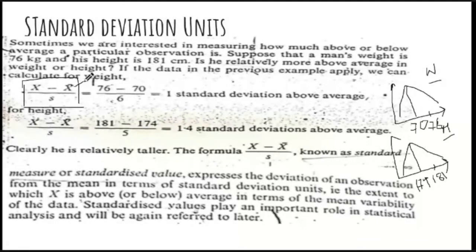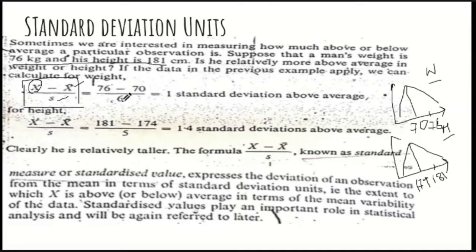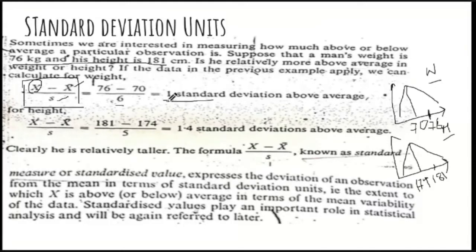This formula gives the distance of a data point from its mean. So for the standard deviation unit of weight, x is 76, minus the average of the weight distribution which is 70, divided by the standard deviation of weight which is 6. The answer is 1. So we are saying this man's weight is 1 standard deviation unit above average.